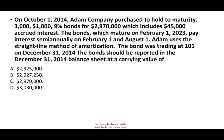Let's take a look at this question and see how we approach it on the CPA exam. On October 1st, 2014 — the date is extremely important when it comes to bonds — Adam Company purchased, held to maturity, 3,000 bonds at 9%, for $2,970,000, which includes $45,000 in accrued interest. There is a lot of information in this sentence, so you have to know how to read bond information.